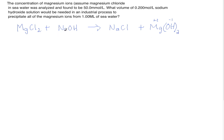Now we balance the chemical reaction. We have one magnesium on each side — balanced. We have two chloride ions on the reactant side, so we place a coefficient of 2 in front of sodium chloride. This unbalances sodium, so we place a coefficient of 2 in front of NaOH. Then checking oxygen: two oxygens on each side, and two hydrogens on each side. The reaction is balanced.